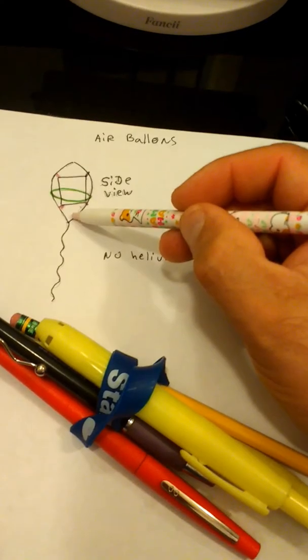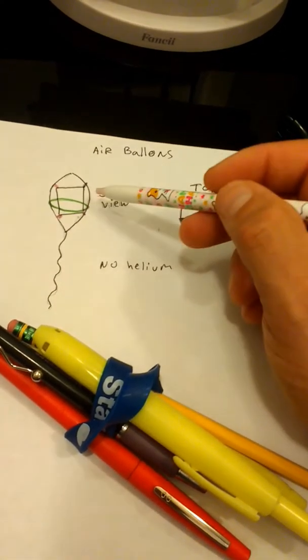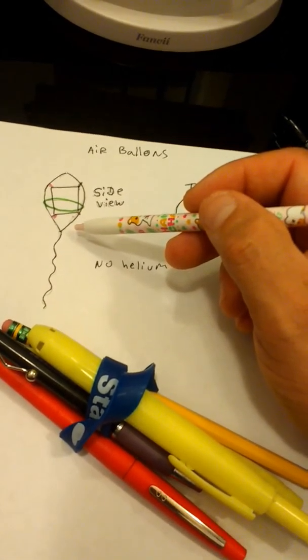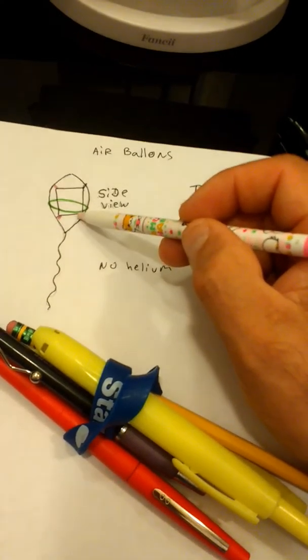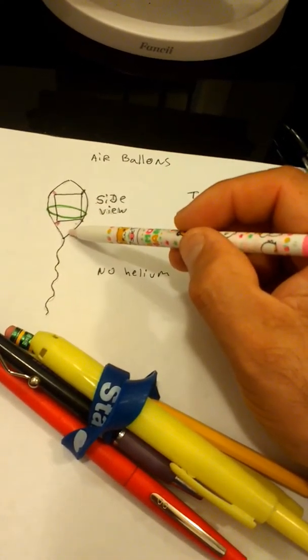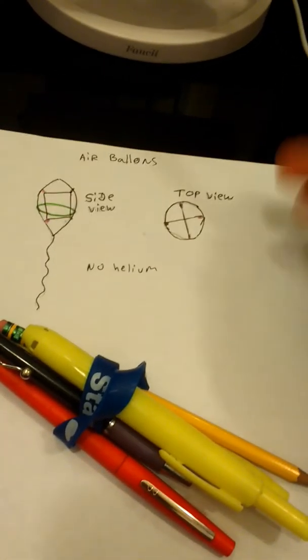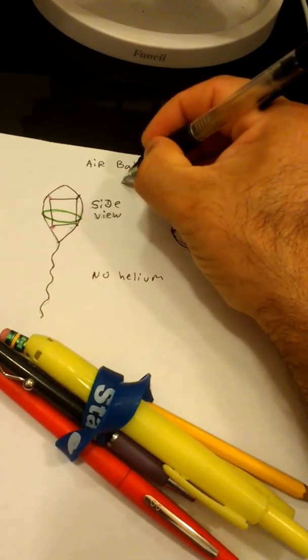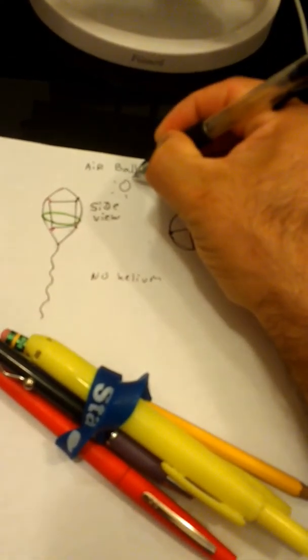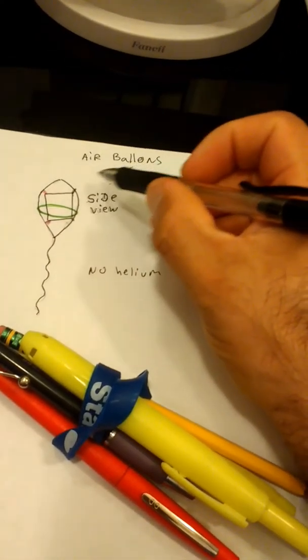And then to make it heat more, I have this circle here. This circle pretty much is a reflective balloon, just like when you buy a balloon sometimes they have a reflective material.